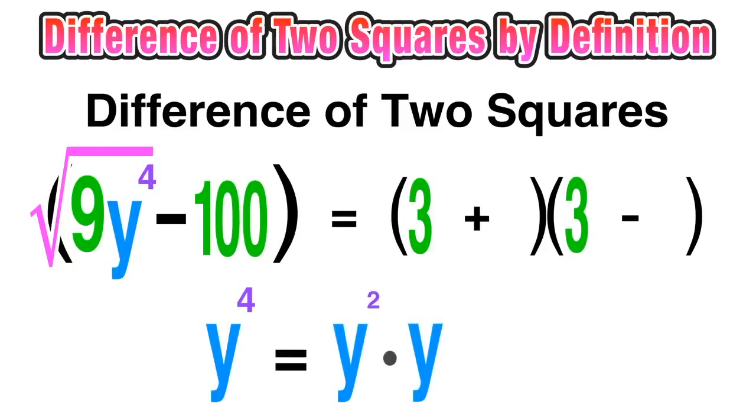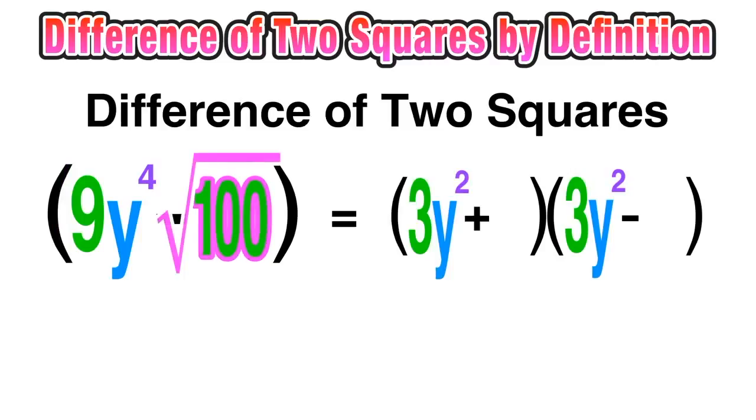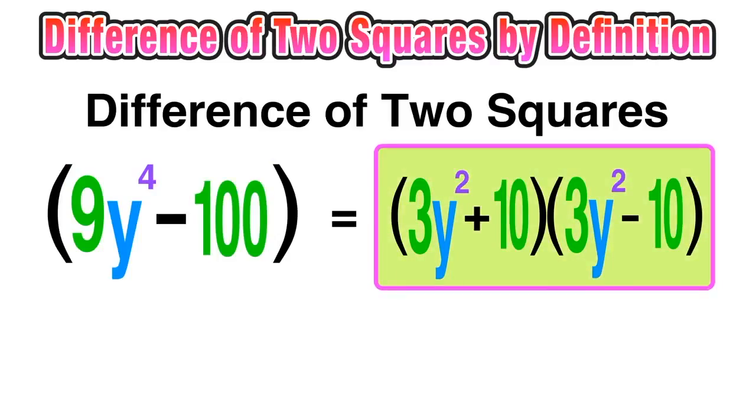And we can achieve that by multiplying y squared by y squared. Remember, we add the exponents when the base is the same, and 2 plus 2 equals 4, so the square root of y to the fourth is just y squared. And now we add the first term for both factors. The second term is super easy since the square root of 100 is just equal to 10, and now we have our factors and again we are done.